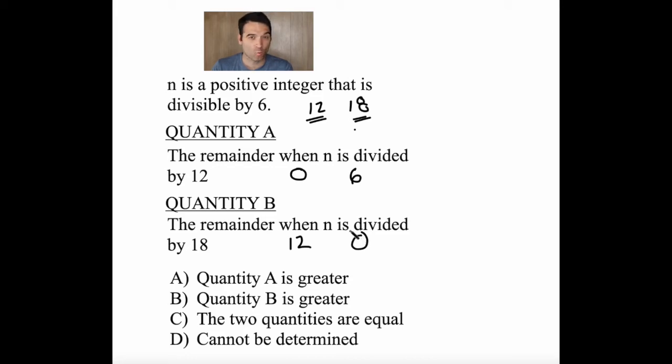So we found one case where quantity B is greater. We found one case where quantity A is greater. That means that the answer here cannot be determined.